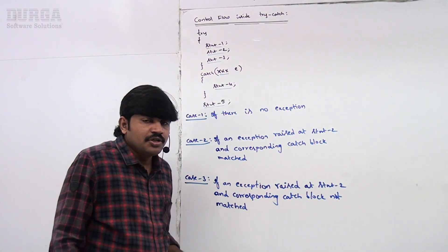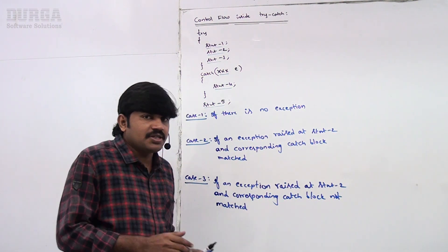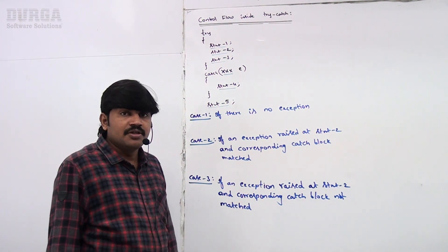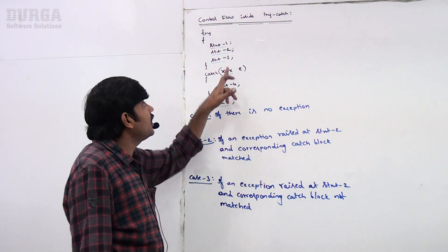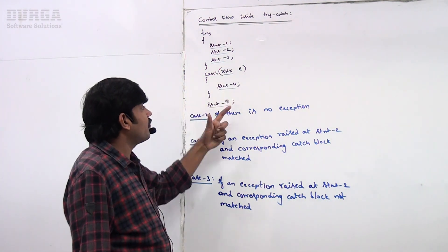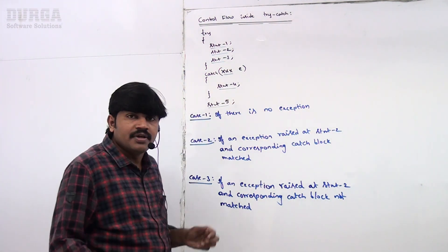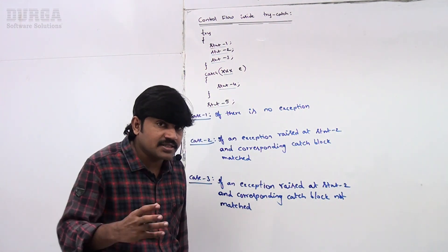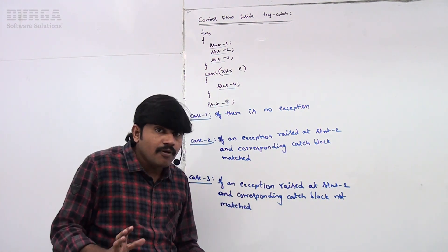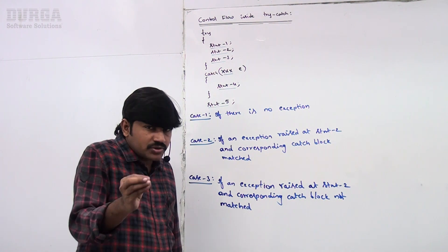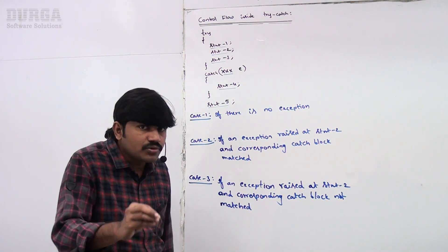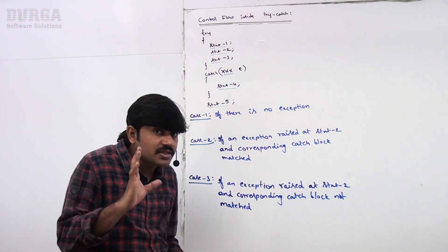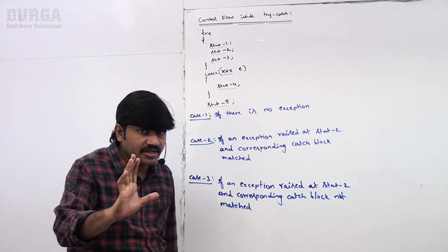Now my question is: if an exception rises at statement one, what will happen? Statement two, what will happen? Statement three, what will happen? Four, what will happen? Five? Like, for each and every statement, if an exception rises, what is the flow? We have to be aware. Most of your doubts will also be clarified from this basic flow. Just take special care to understand.